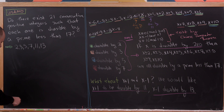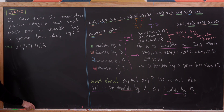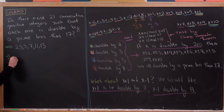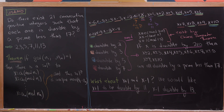Let's put that theorem on the board. The Chinese Remainder Theorem says that if the GCD of n1, n2, up to nm is 1, then there is a solution to the following system of congruences: x ≡ a1 (mod n1), x ≡ a2 (mod n2), all the way down to x ≡ am (mod nm). We're guaranteed a solution exists, and in fact the solution is unique modulo the product of n1 through nm.